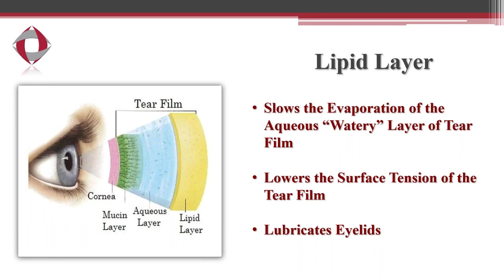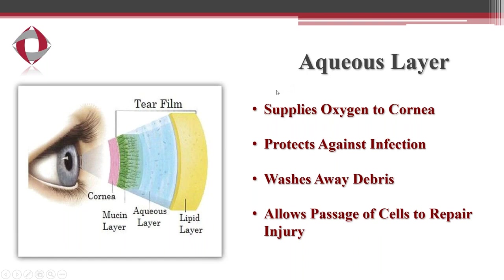The outer lipid layer is an oily layer secreted by the meibomian glands, which line the lid margin of the eyelids. The purpose of this layer is to slow the evaporation of the watery layer of the tear film beneath. It also helps lower the surface tension of the tear film, keep the tear film stable, and lubricate the eyelids.